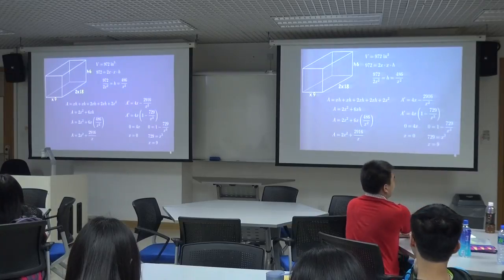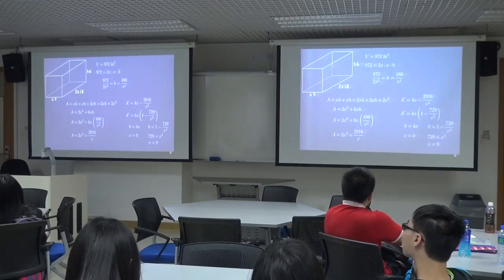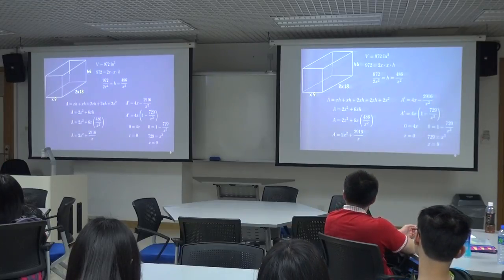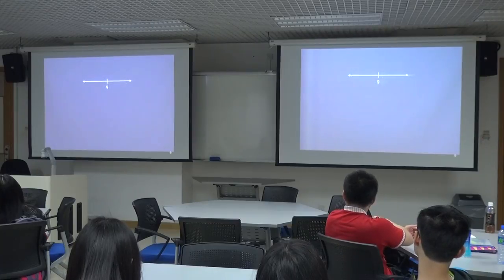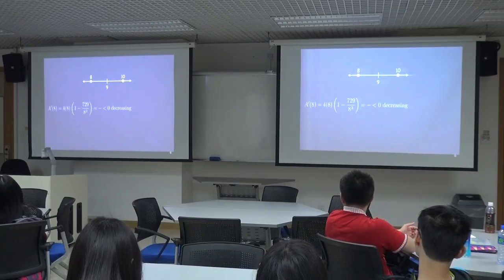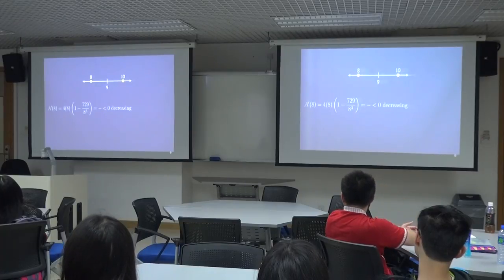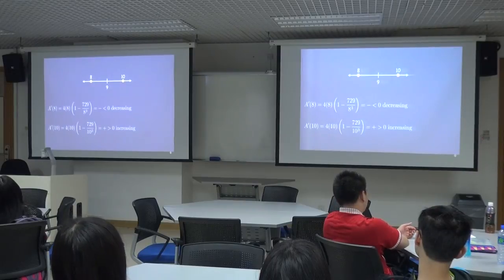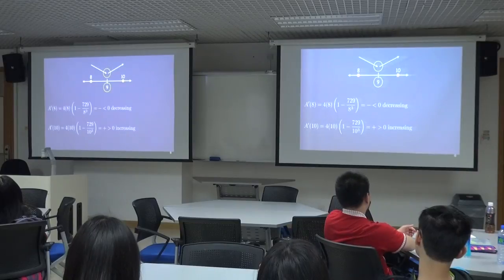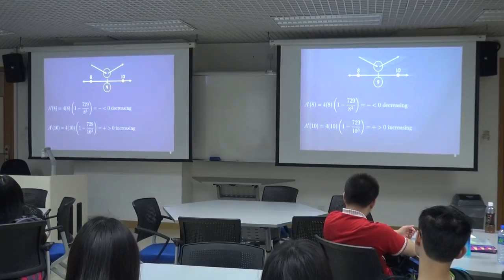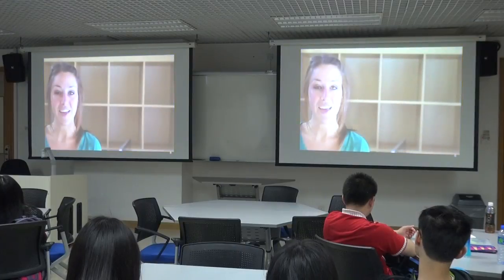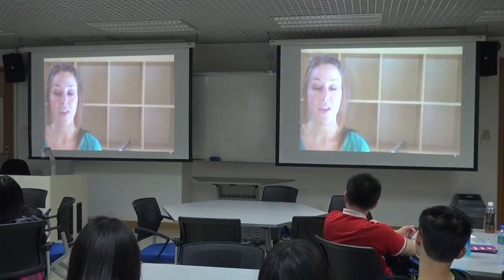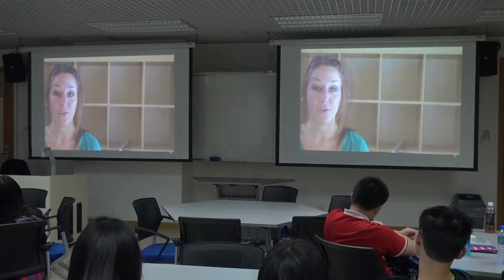To ensure we found the correct dimensions, confirm that x equals 9 is a local minimum. Plot x equals 9 on a number line, pick values on either side like 8 and 10. Plugging 8 into the first derivative gives a negative result; plugging 10 gives a positive result. This negative-then-positive pattern confirms that 9 is a local minimum, meaning dimensions 9 by 18 by 6 do in fact minimize the surface area.